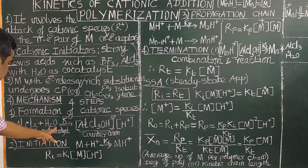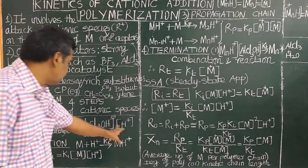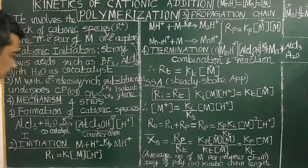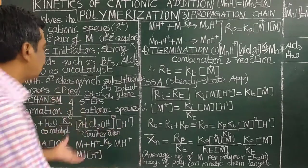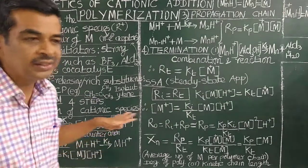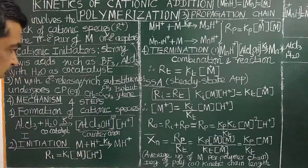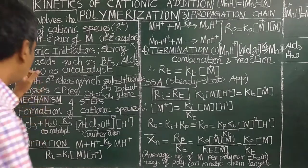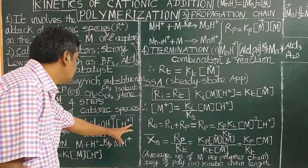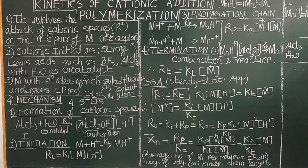The Lewis acid reacts with a small quantity of water to give H+ and the counter anion (e.g., AlCl4⁻). Lewis acids are used as initiators rather than mineral acids because mineral acids would give addition products rather than polymerization. In the chain initiation step, the H+ attacks the electron-rich monomer.